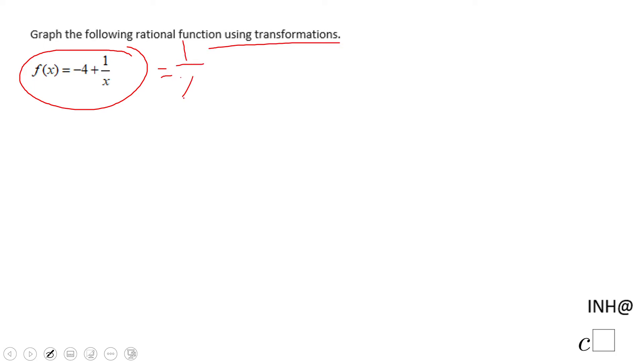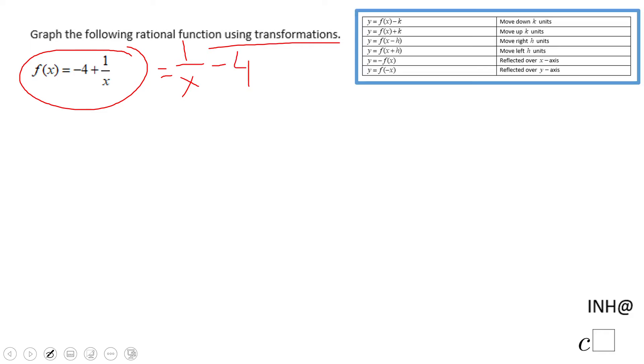this format, 1 over x minus 4. It makes a little bit more sense because now we can use what you see here. Okay, these are the transformations, the rigid transformations, and our situation goes with this. You see the